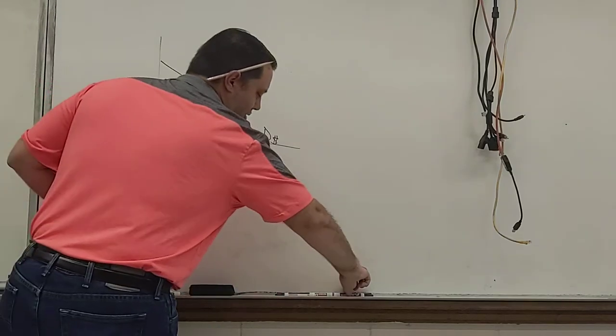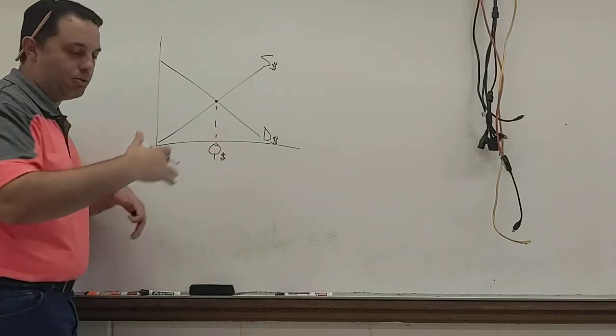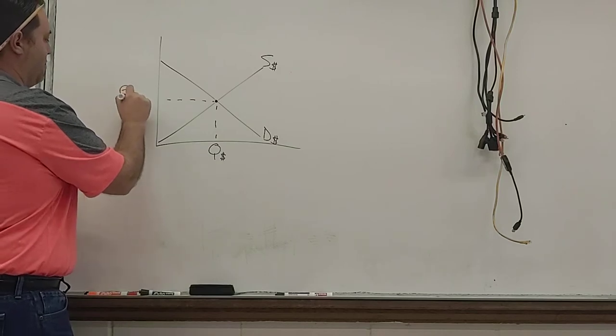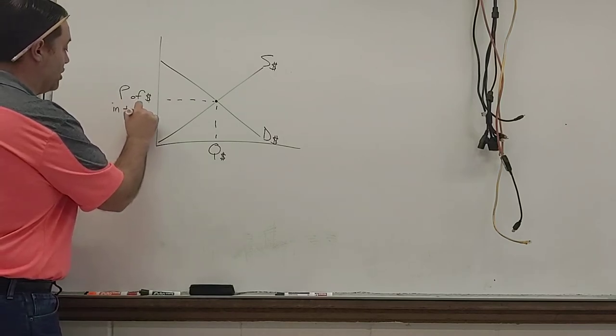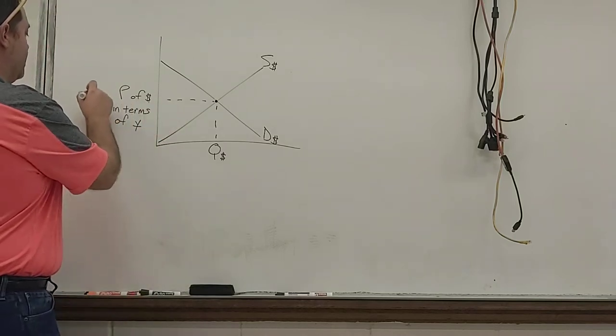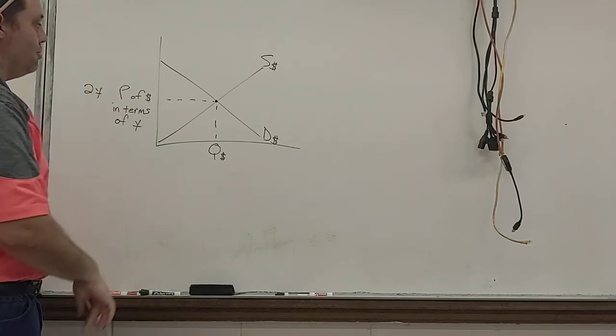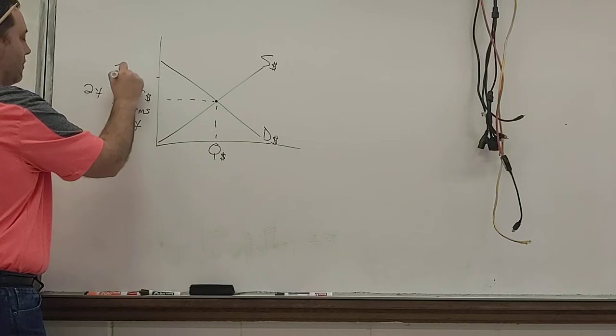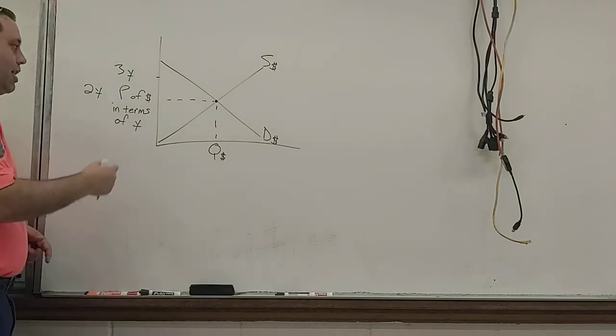All right, next thing we always look at is equilibrium. Quantity is pretty straightforward. Quantity is always going to be just the quantity of dollars. Cool, that's not anything too difficult. Here's where it gets a little tricky is the price of dollars. Well, how do we measure that? It's the price of dollars. In this case, if we're talking about Japanese yen, it's going to be price of dollars in terms of yen. So as an example, if we started off with a price of, and hopefully you guys can see this over here, of like two yen, that means price of one dollar is two yen. If we end up at a different price, at a higher price, maybe instead of equilibrium, maybe somewhere up here, now we're at a price of three yen in terms of one dollar. So this is always the price of dollars in terms of yen.